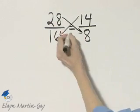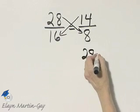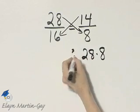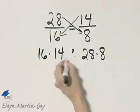This cross product and this cross product. We're looking here at 28 times 8, and we want to know how does that compare with this cross product, 16 times 14.